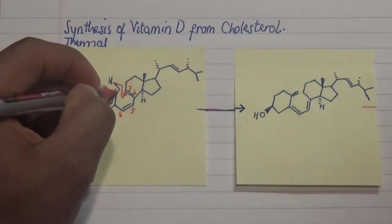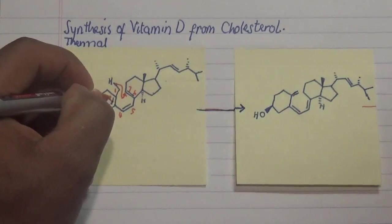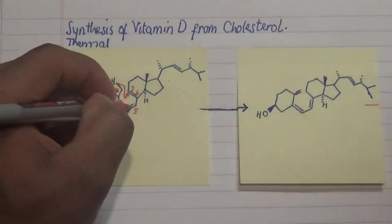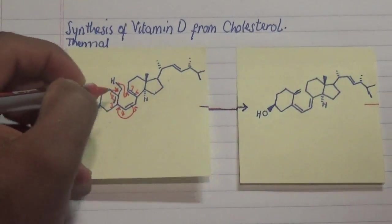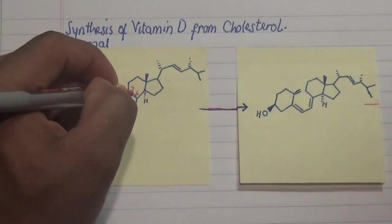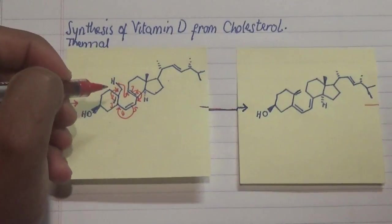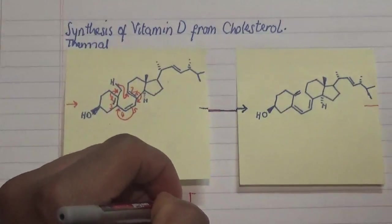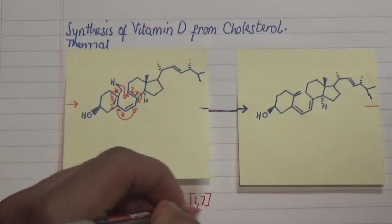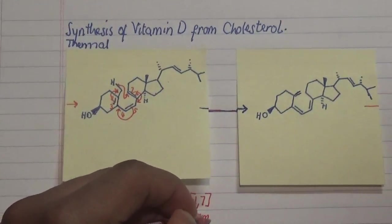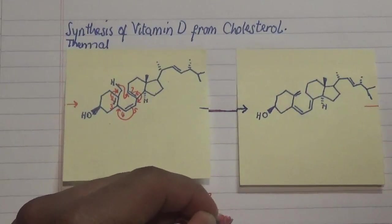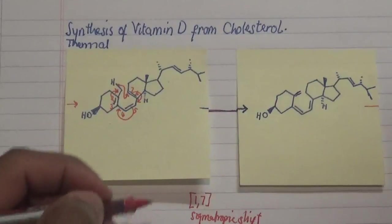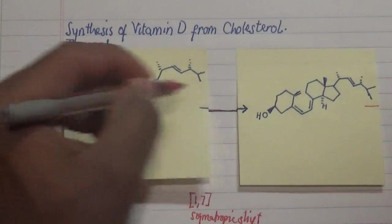As the hydrogen is being moved, this bond forms a pi bond here, then this bond forms a pi bond here, and this bond over here forms a pi bond here as well. This reveals that we do have a 1,7-sigmatropic shift of a hydrogen atom that leads to the formation of our product.